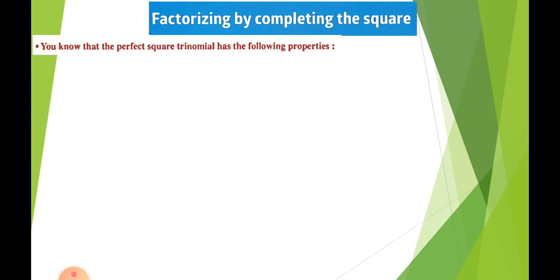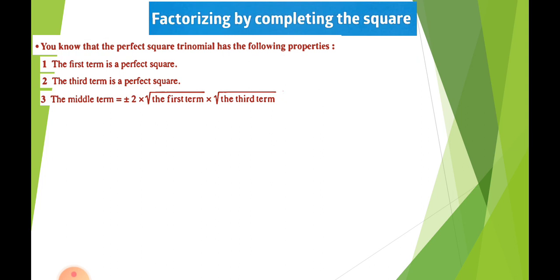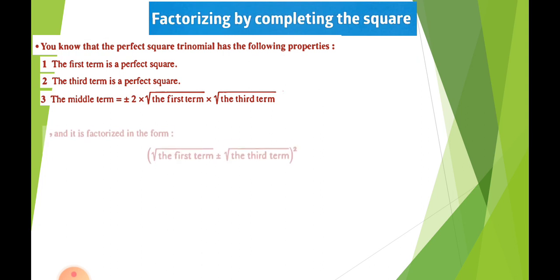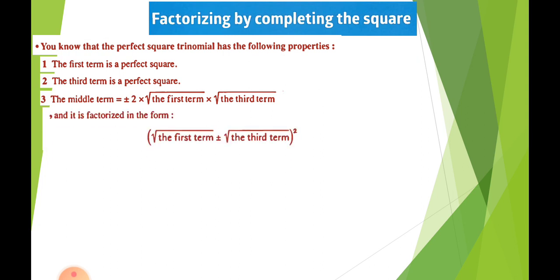We know that perfect square trinomials have the following properties: the first and third terms are perfect squares, and the second term is positive or negative two times the square root of the first term times the square root of the third term. If we want to factorize perfect square trinomials, we open two brackets and put the root of the first term plus or minus — matching the sign of the middle term — and root of the third term, all squared.